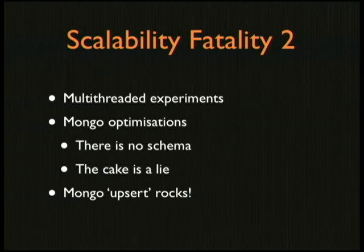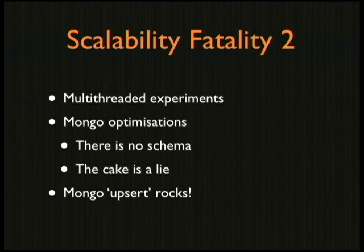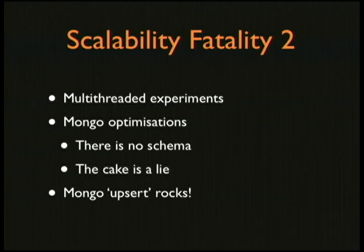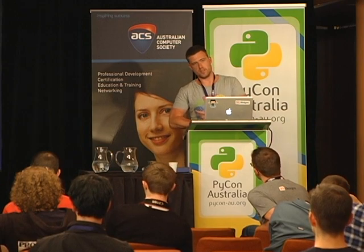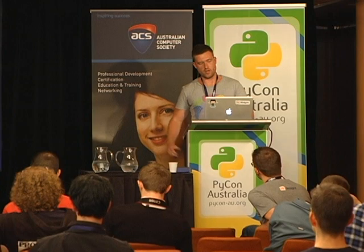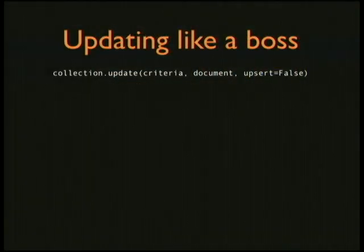We had to optimize. It was taking three seconds to log an error and the logging server was capped at 100% CPU. Lars looked at multi-threaded approaches to get more throughput, and I looked at optimizing Mongo. With Mongo there's no schema, but it turns out the document structure has a massive performance impact — you can do anything you like, but you can get yourself in a lot of trouble.